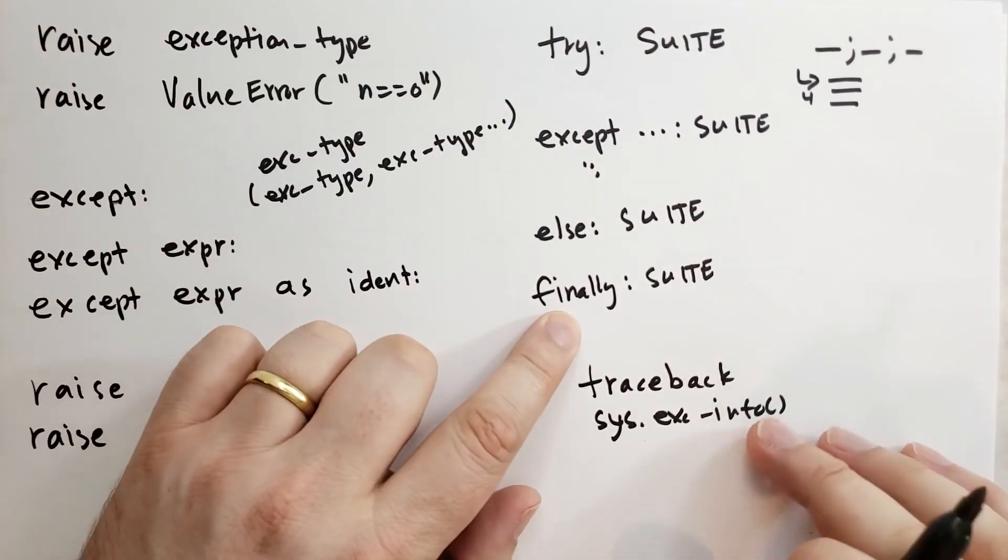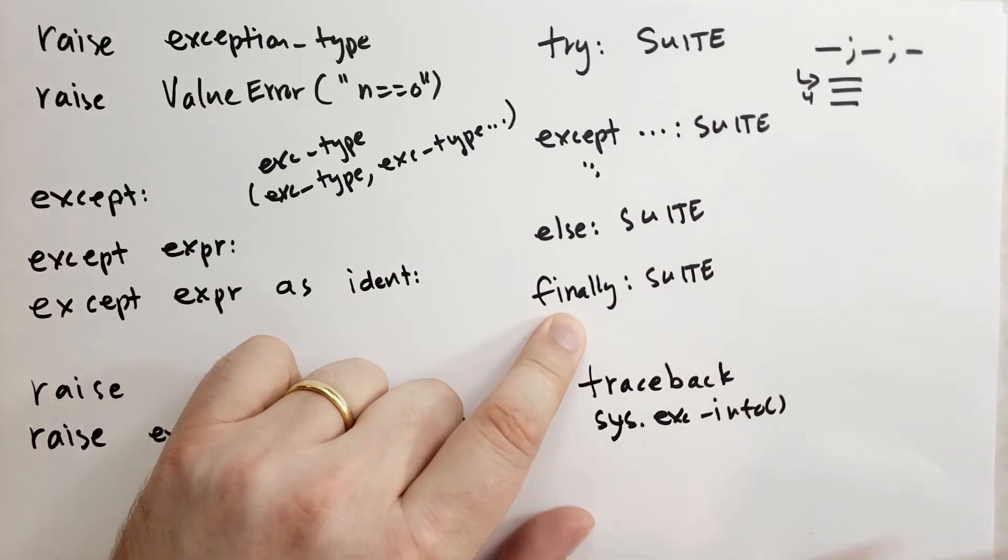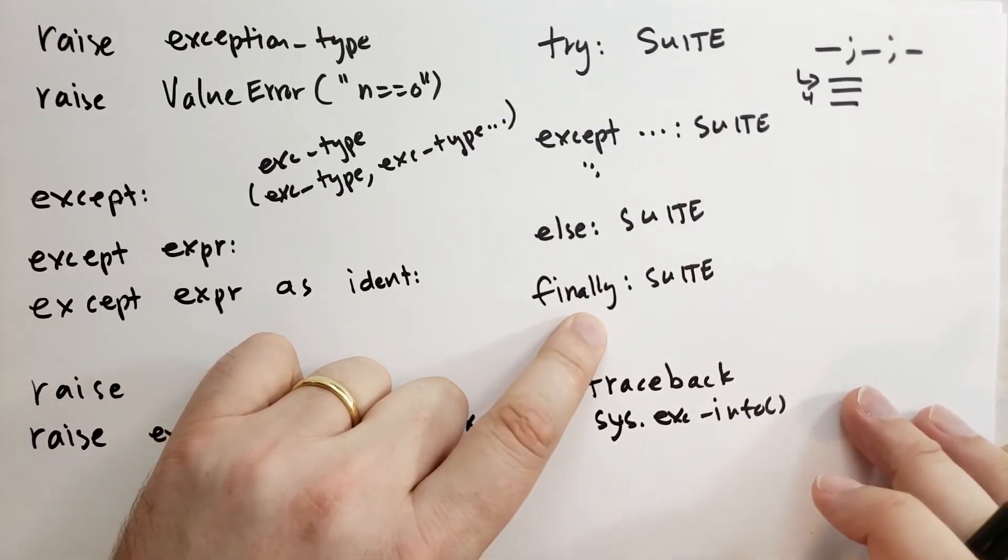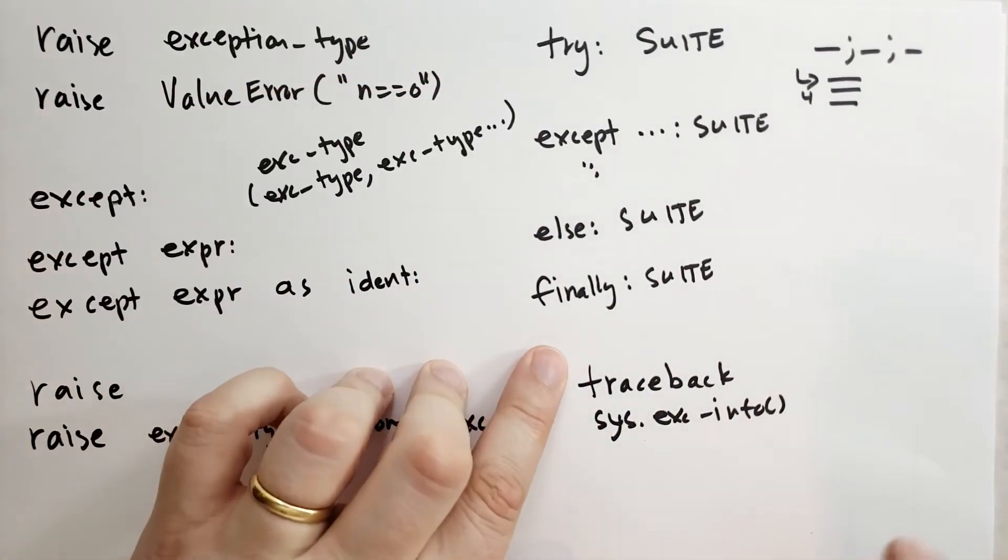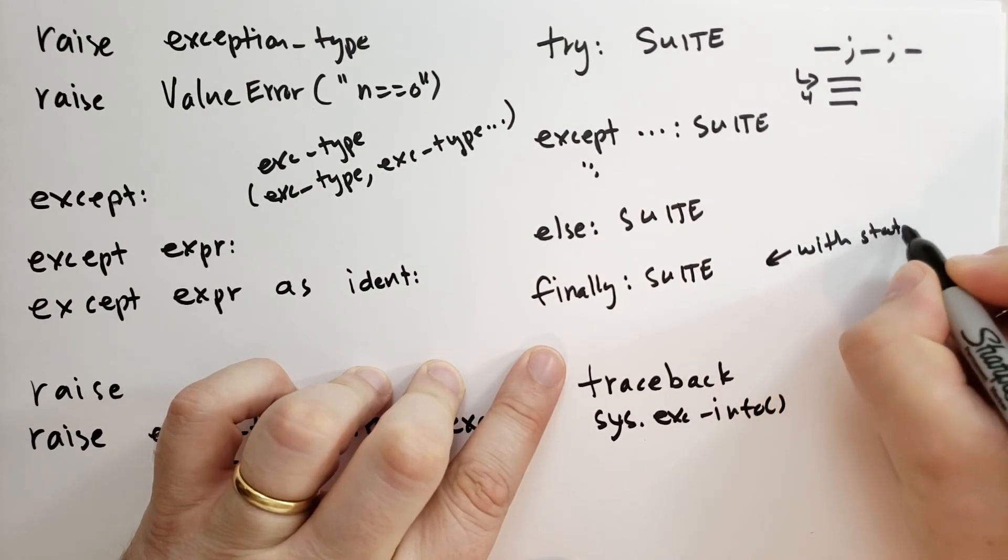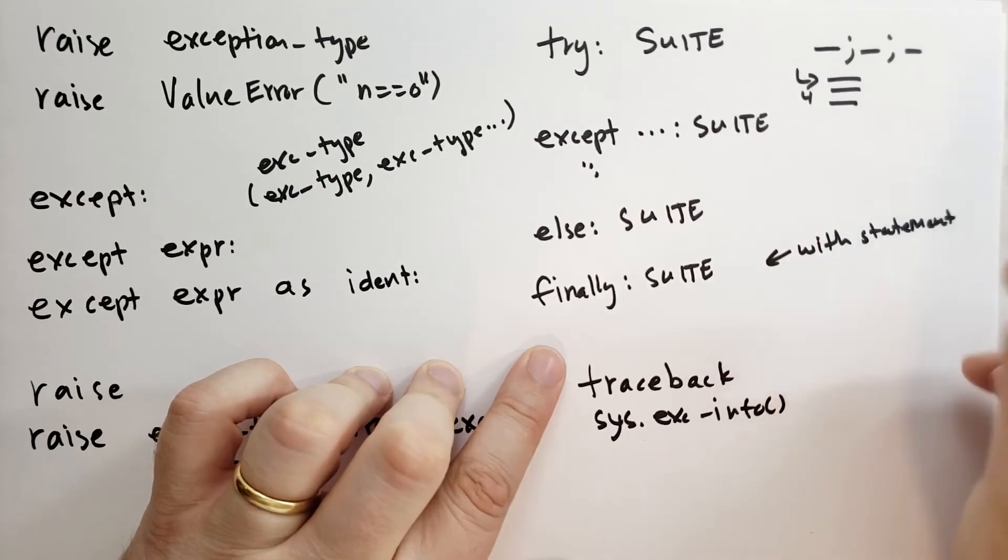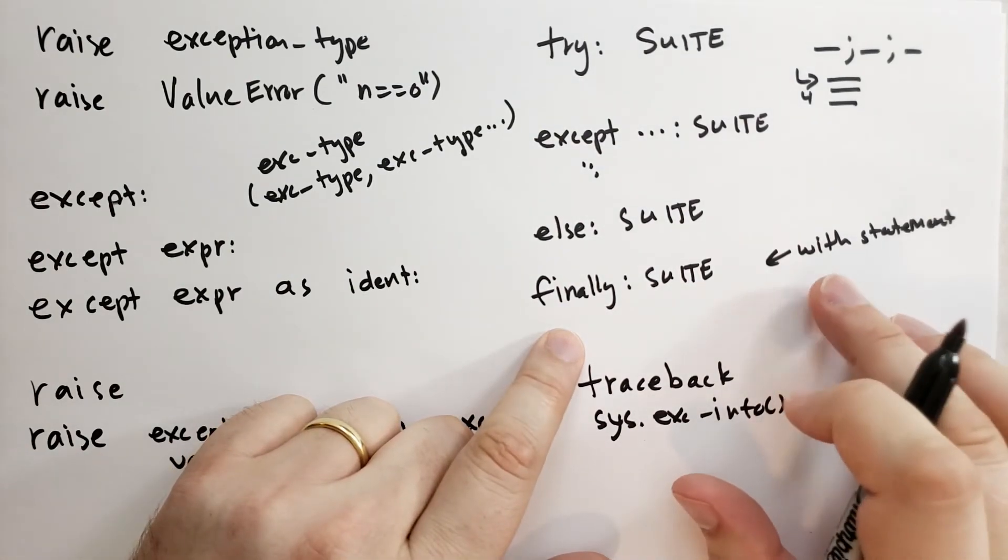What do we use the finally statement for? Sometimes we need to deallocate resources like unlock a lock in memory or write a file to disk or behavior like that. And it needs to happen whether or not an exception is raised. You can also use a with statement to replicate this feature. Typically, I don't use finally statements. I try to rewrite it as a with statement.